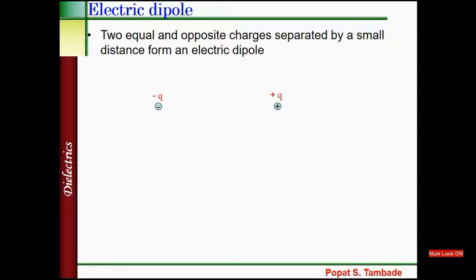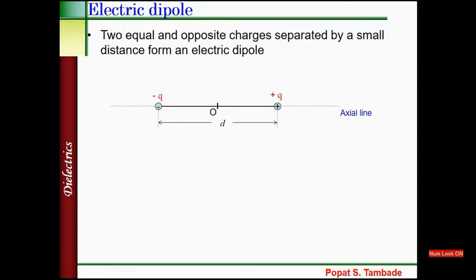So here we have two charges, minus q and plus q, separated by a distance, suppose d. O is the center of that distance. The line along the length of the dipole is called the axial line. Another line that is perpendicular to the length of the dipole and passing through O, the center, is called the equatorial line.